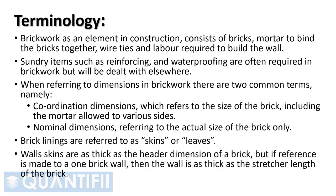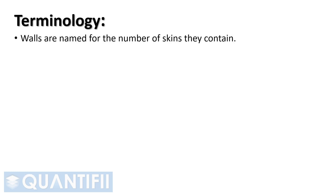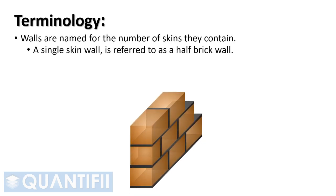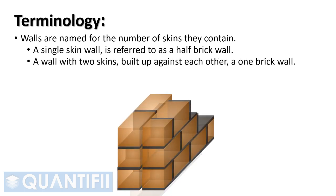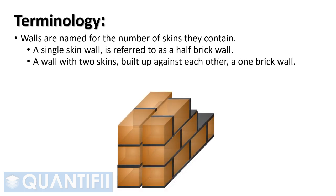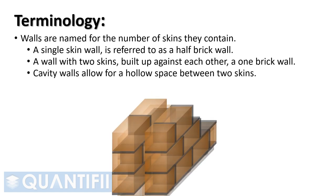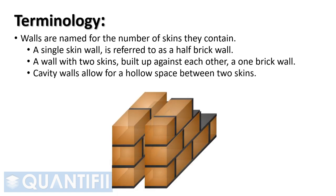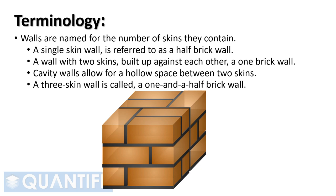Wall skins are as thick as the header dimension of a brick, but if reference is made to a one brick wall, then the wall is as thick as the stretcher length of the brick. Walls are named for the number of skins they contain. A single skin wall is referred to as a half brick wall. A wall with two skins built up against each other is a one brick wall. Cavity walls allow for a hollow space between two skins. A three skin wall is called a one and a half brick wall.